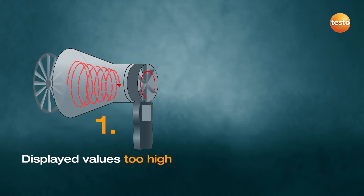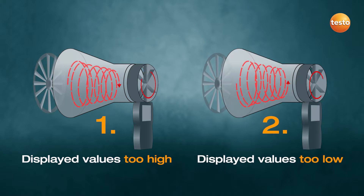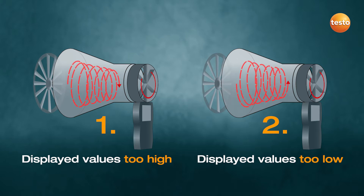Let's take a closer look at what happens. First: the direction the swirl rotates is the same as that of the vane. The flow hits a larger cross-sectional area of the individual blades of the vane, making it accelerate too fast. Second: the direction the swirl rotates is the opposite to that of the vane. The flow passes between the individual blades of the vane, meaning it doesn't accelerate properly. Result: an inadequate flow velocity is displayed.